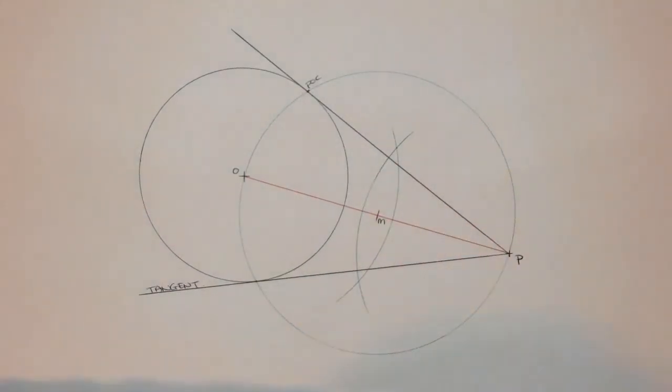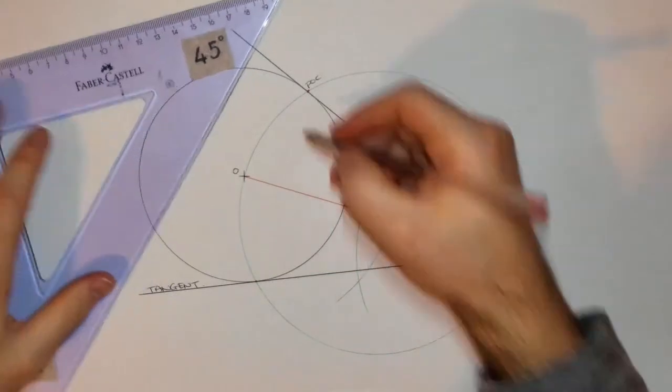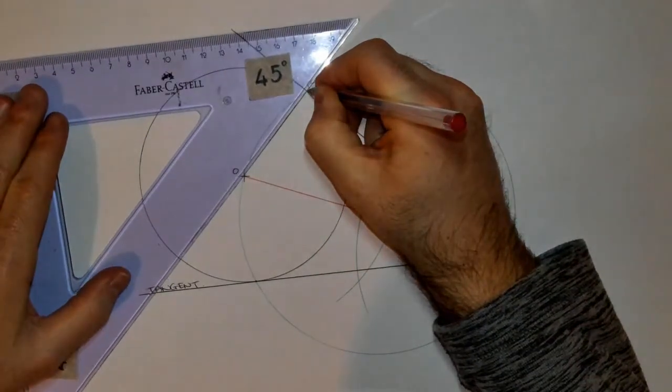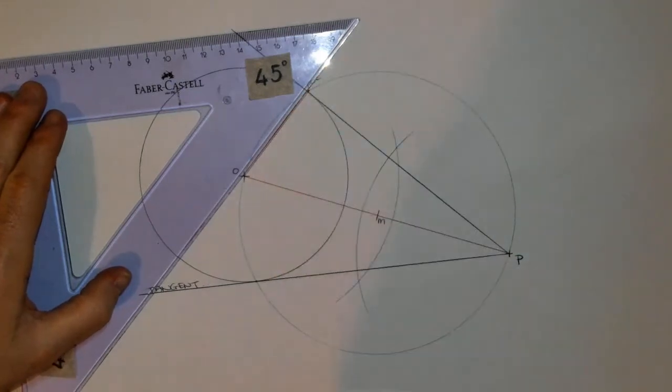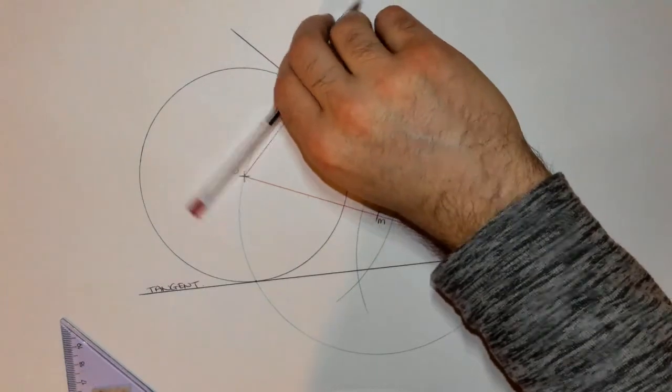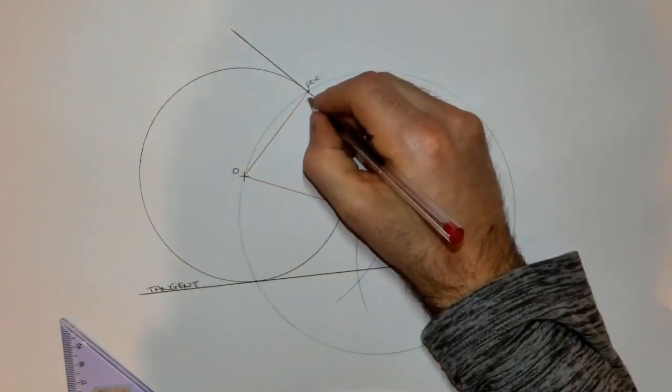Now the last little bit, an important bit to know, is that where that point of contact is, if I was to connect that to O, like that, the relationship between the tangent and this line here is that they are perpendicular to one another.